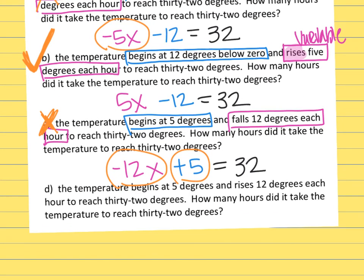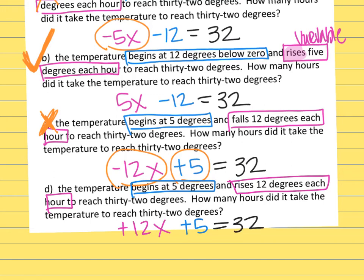Then the last one, it says the temperature begins at 5 degrees, so that's plus 5. And it rises 12 degrees each hour, so that's positive 12X until it reaches 32 degrees. So on this one, again, both of these numbers are wrong because it has the wrong number with the variable compared to the constant.